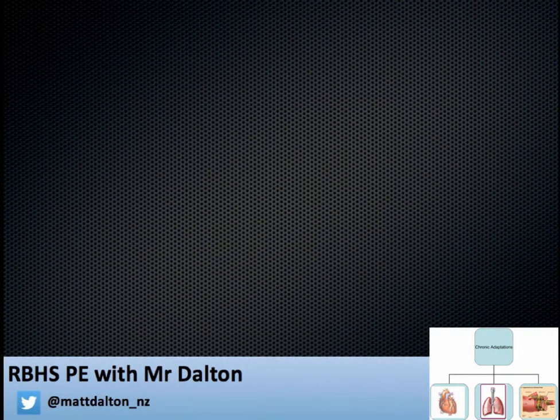Now we're going to spend some time looking at chronic adaptations. Chronic adaptations are changes that occur in the body as a result of training. They can occur in the cardiovascular system, the respiratory system and the muscular system. As a result of applying these methods of training appropriately with principles of training, we should see the following chronic adaptations over time.